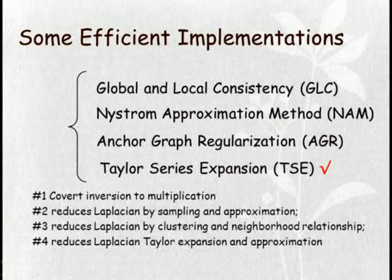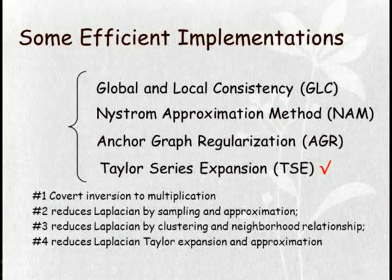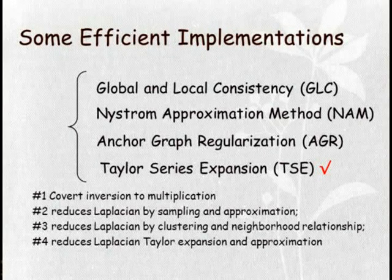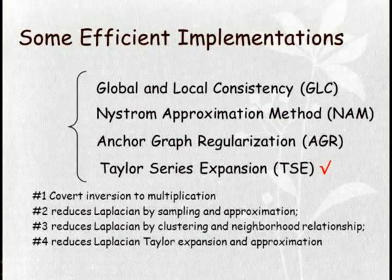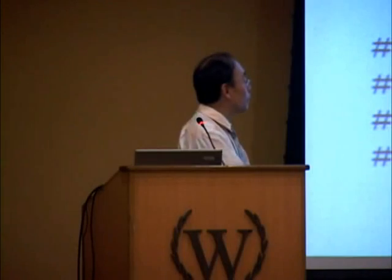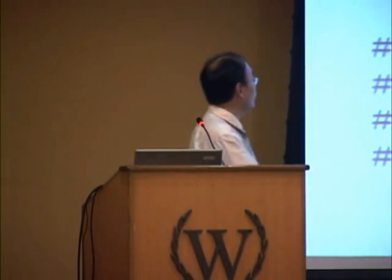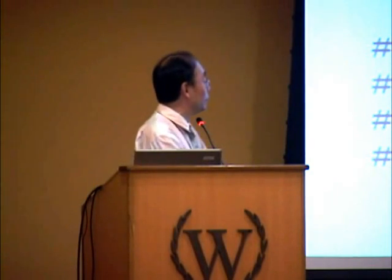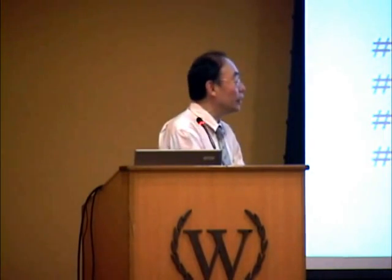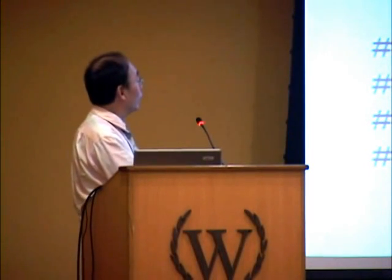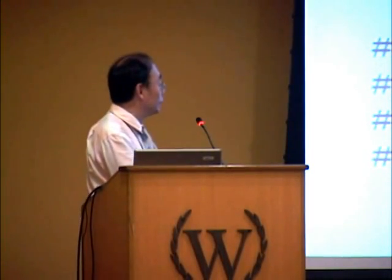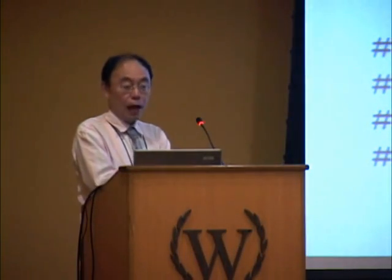Other researchers have already published papers on this. The new model was developed by us. The first approach converts the matrix inversion to multiplications. The second reduces the Laplacian by eigenvalue approximations. The third reduces the Laplacian by clustering and neighborhood regularization. Our algorithm reduces the Laplacian using multivariate Taylor series expressions and approximations.